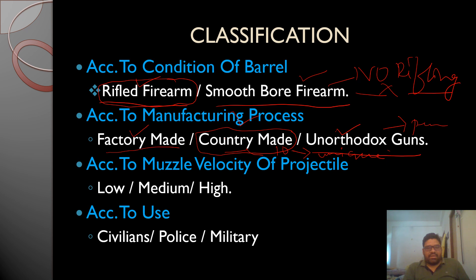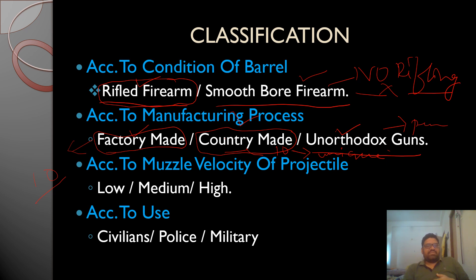Based on manufacturing process, firearms are classified as factory-made, country-made, and unorthodox guns. Unorthodox guns — for example pin guns — have no manufacturing specification. In country-made guns there is no standard protocol; each gun exhibits a unique pattern with no constant features. In factory-made guns there is a standard specification, and all guns produced by the company have consistent barrel dimensions.